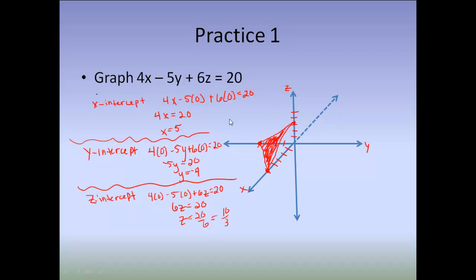Alright, you should have found your X intercept to be 5. So, you would come forward 5. Should have found your Y intercept to be negative 4. So, you go to the left 4. Should have found your Z intercept to be 10 thirds. So, you go up 10 thirds. Plot each of those intercepts, connect them, and then shade in the triangle.